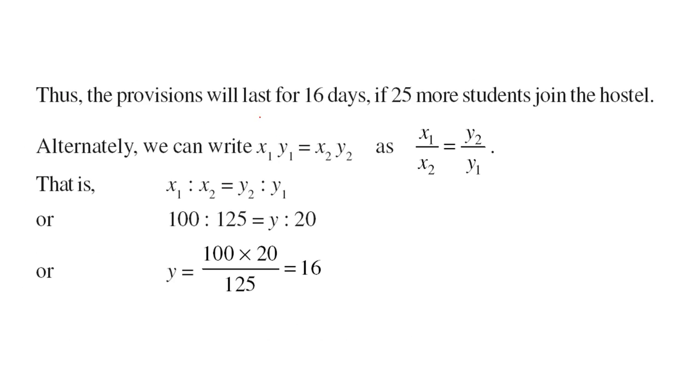So there is another way also. You can just take the way I described you. x1 y1 will be x2 y2 because the content remains same. So x1 by x2 will be equal to y2 by y1. Just put the value you get again y equal to 16.